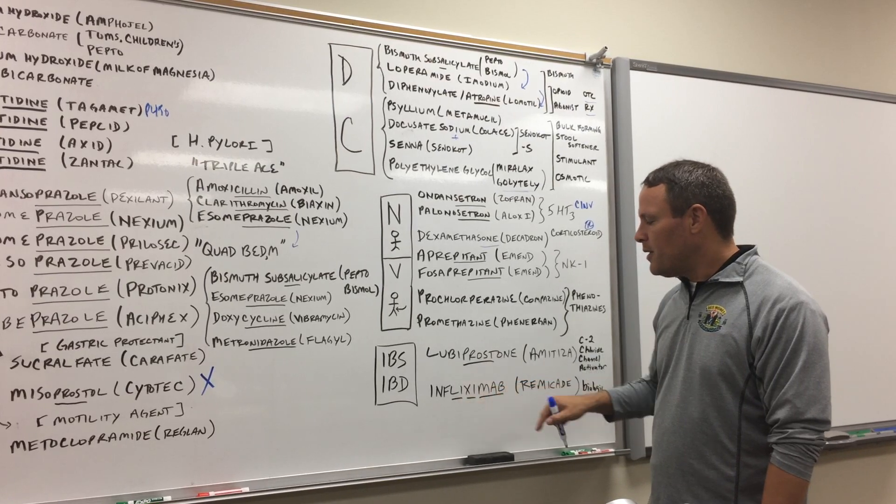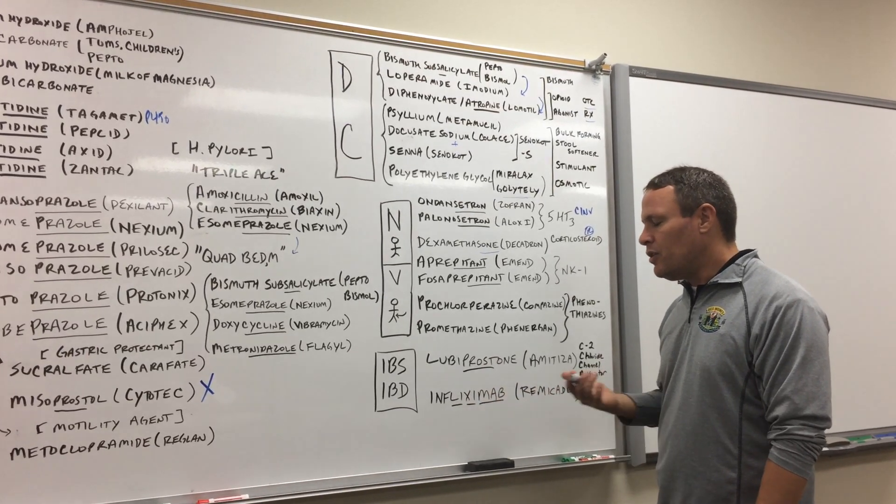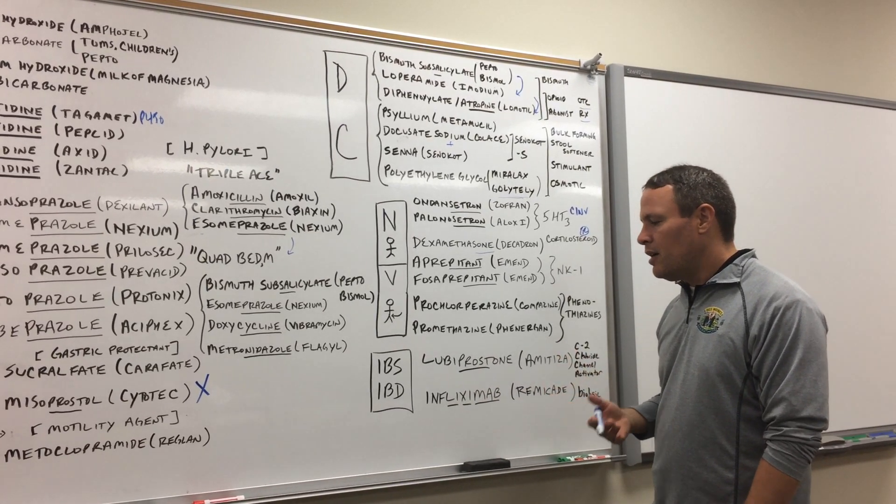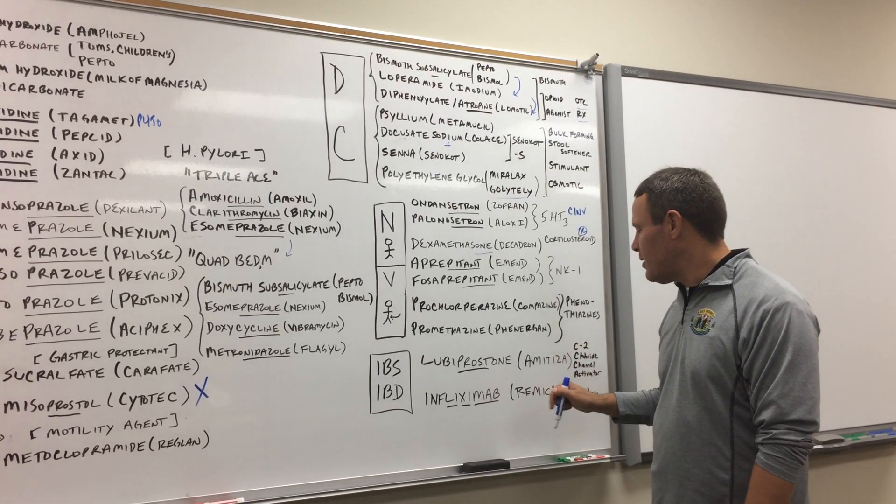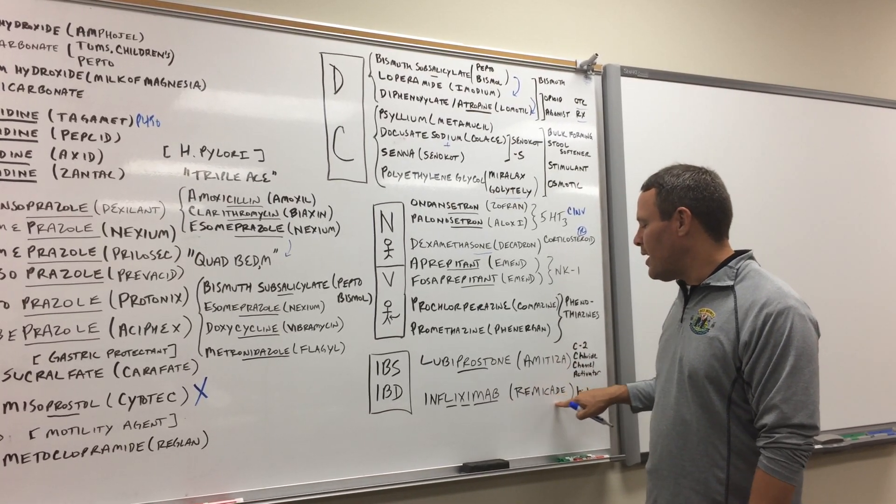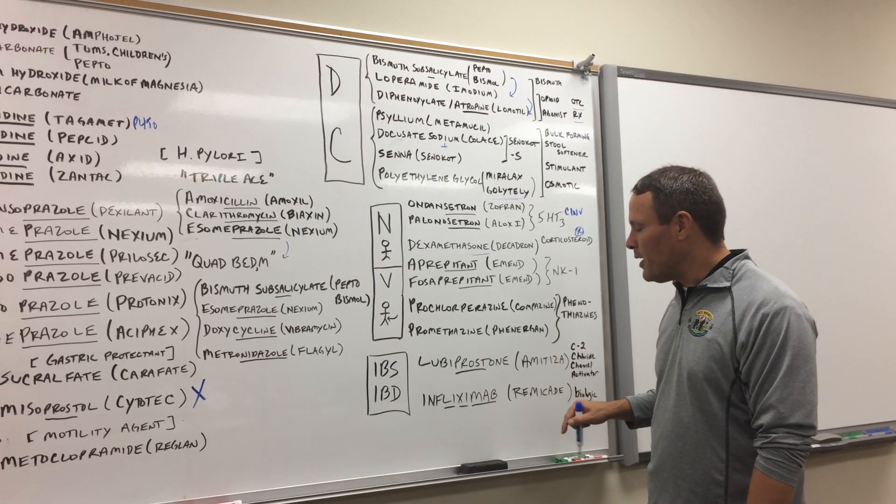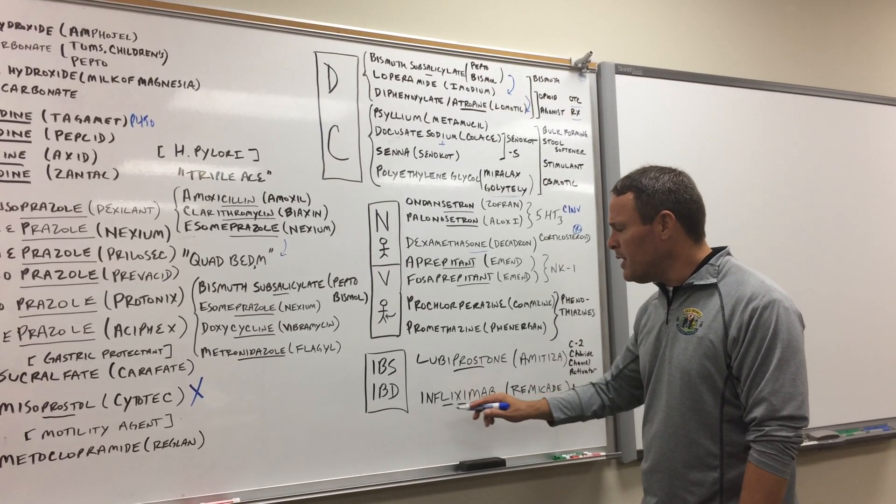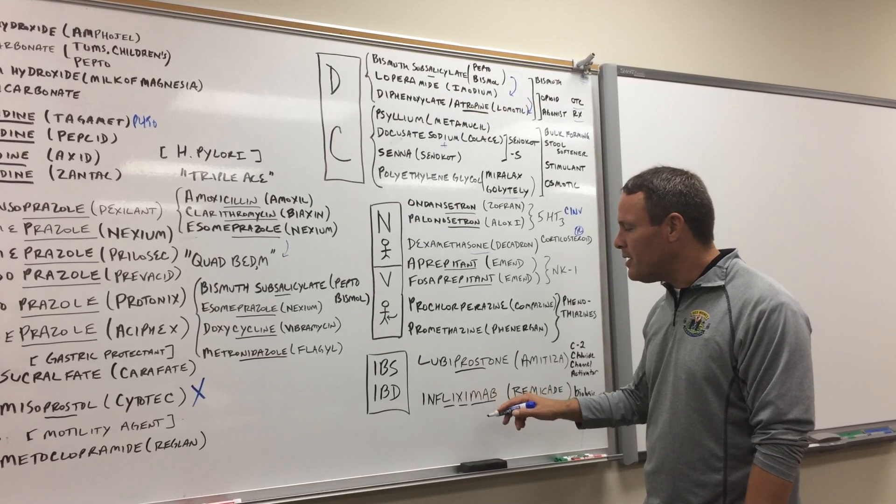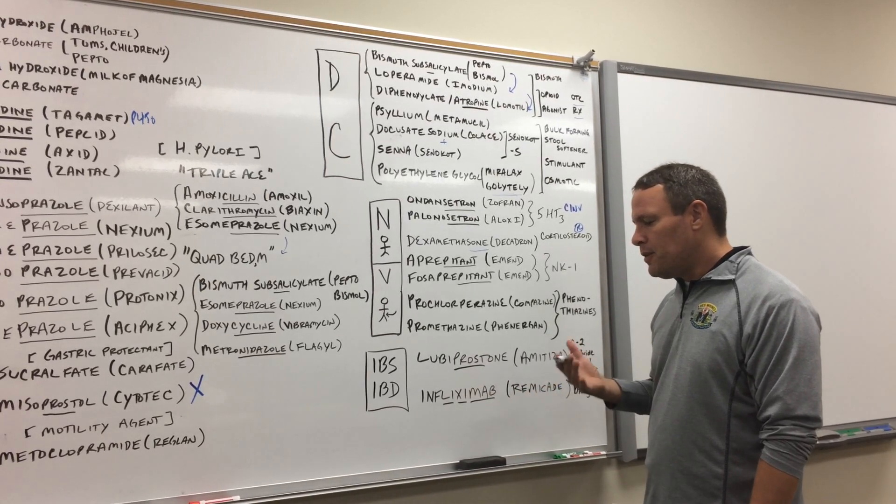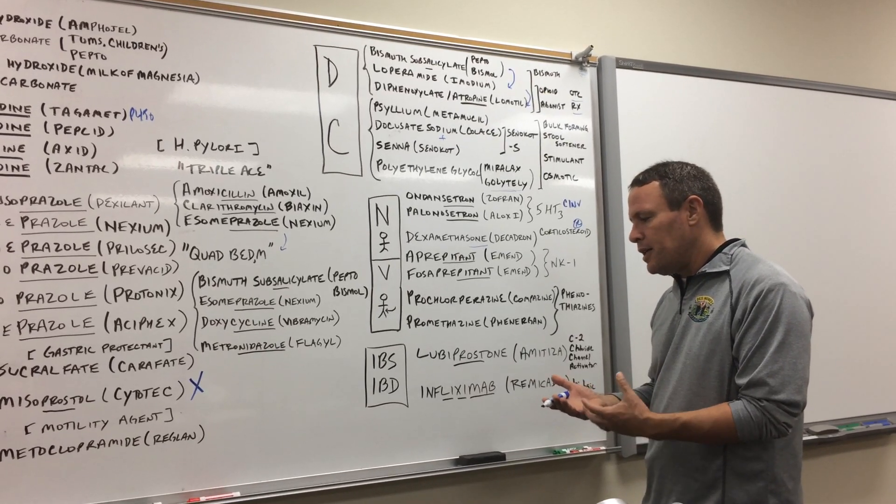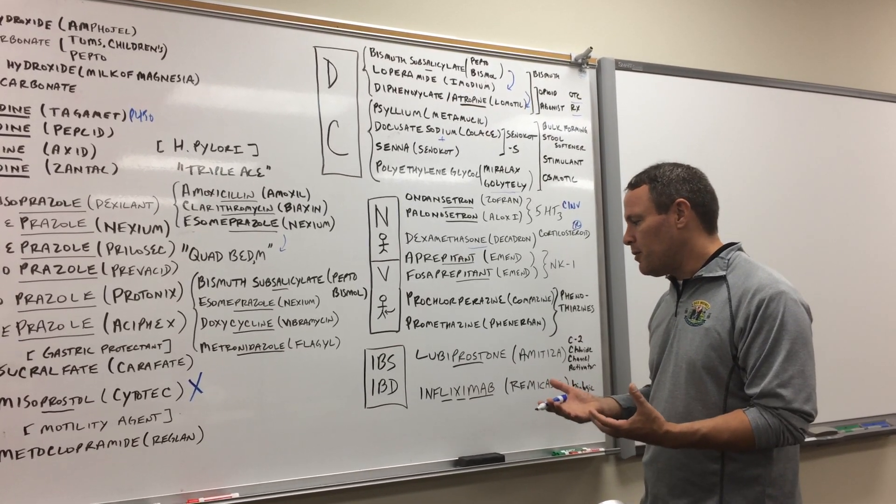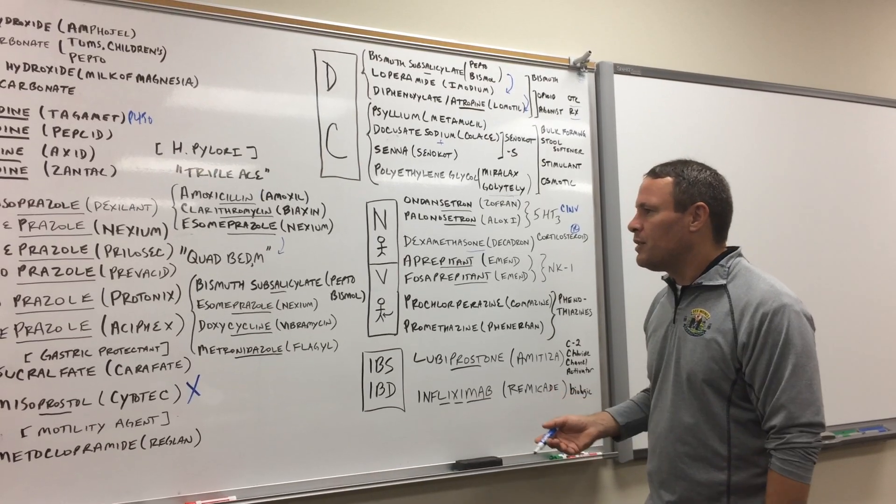But knowing them allows you to know, okay, well, was it humanized? Was it chimeric? Was it human? And all of these things that kind of give you some extra details. But this is a remission aid, where the brand name Remicade comes from. And the idea with irritable bowel disease is that if the body is attacking itself, then we want to shut down the immune system a little bit, so that we prevent it from hurting itself.